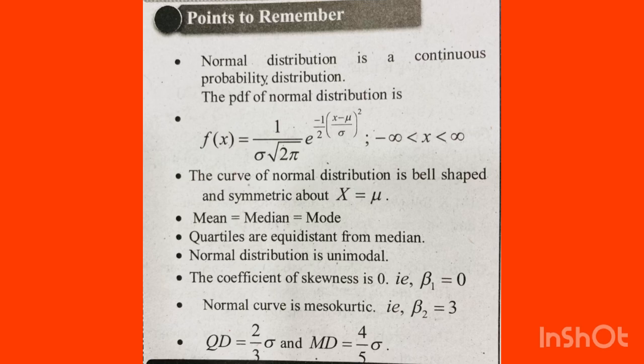Normal distribution is a continuous probability distribution. The PDF formula is: f(x) = 1 divided by sigma times square root of 2pi, multiplied by e raised to minus 1 by 2 times (x minus mu divided by sigma) squared.